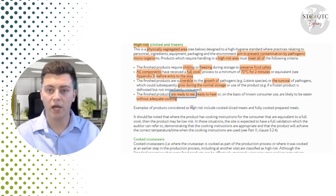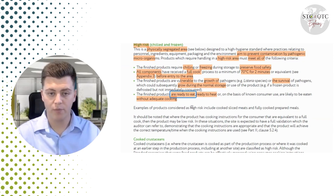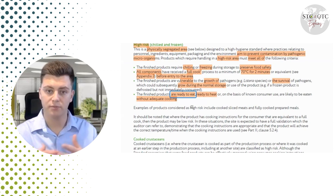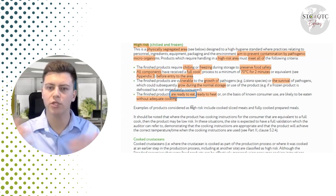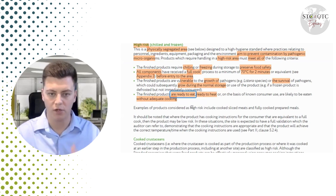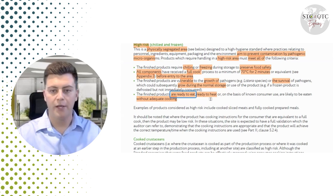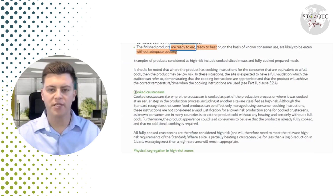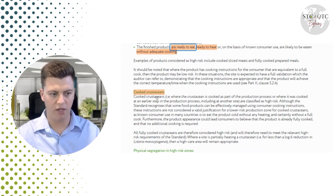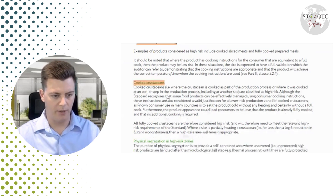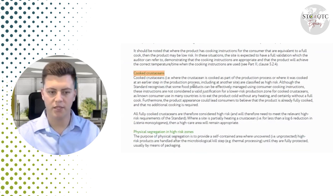High risk areas must also have positive air pressure, and the air within the area must be controlled and filtered. As auditors, we check that HEPA filters are changed regularly and that their specifications are correct. The standard also gives examples of products that could fall into the high risk area, such as cooked crustaceans and cooked meats.